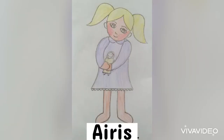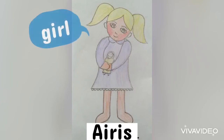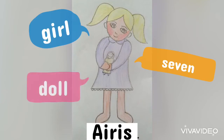Okay, the name is Iris. She's a girl. She's 7 years old. And she has a doll.